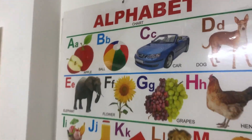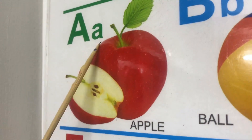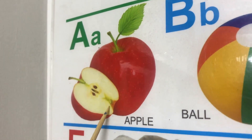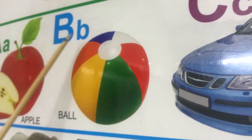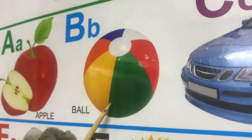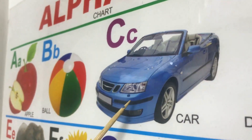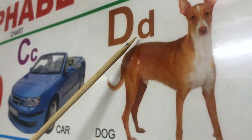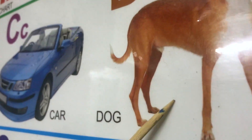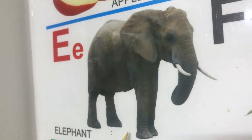Say children: this is capital A, small a. A for apple. Capital B, small b. B for ball. Capital C, small c. C for car. Capital D, small d. D for dog. Capital E, small e. E for elephant.